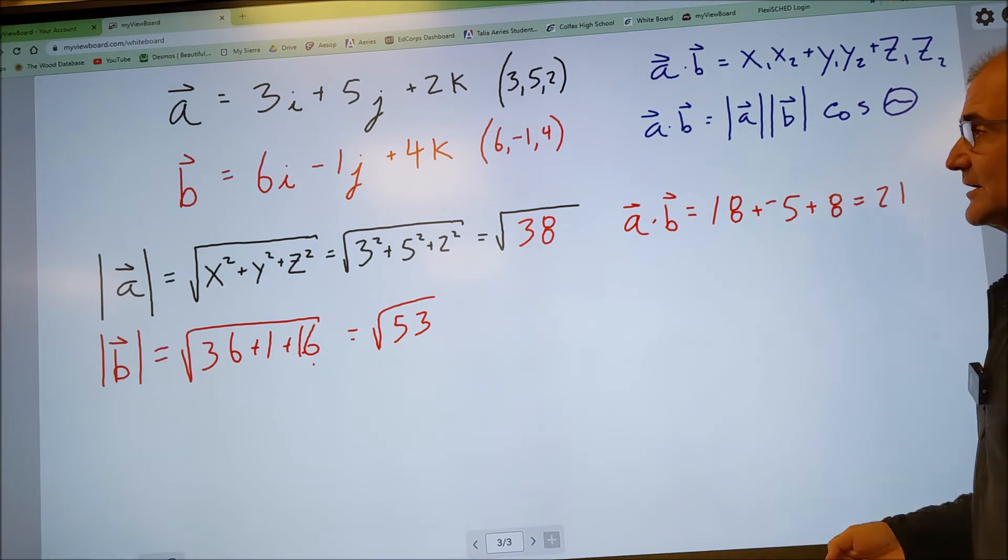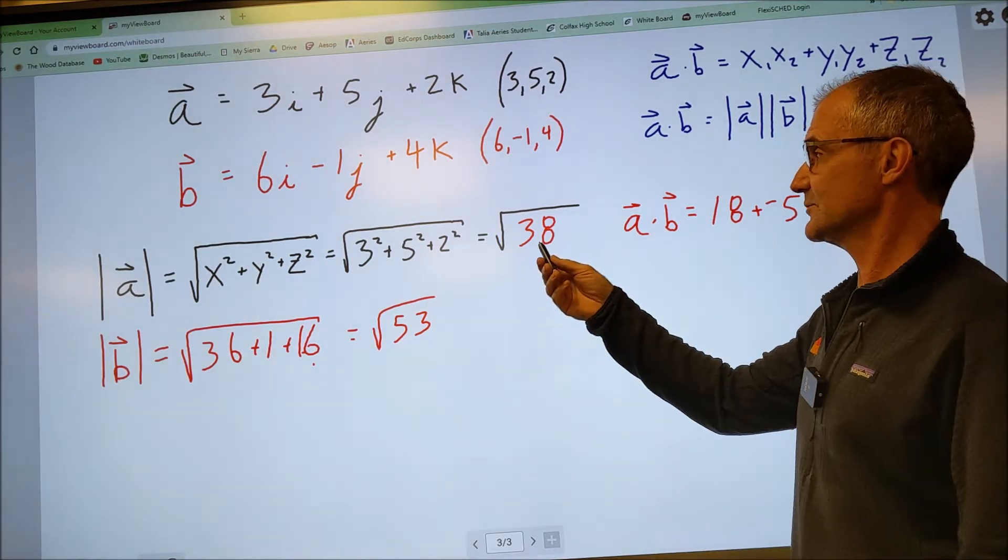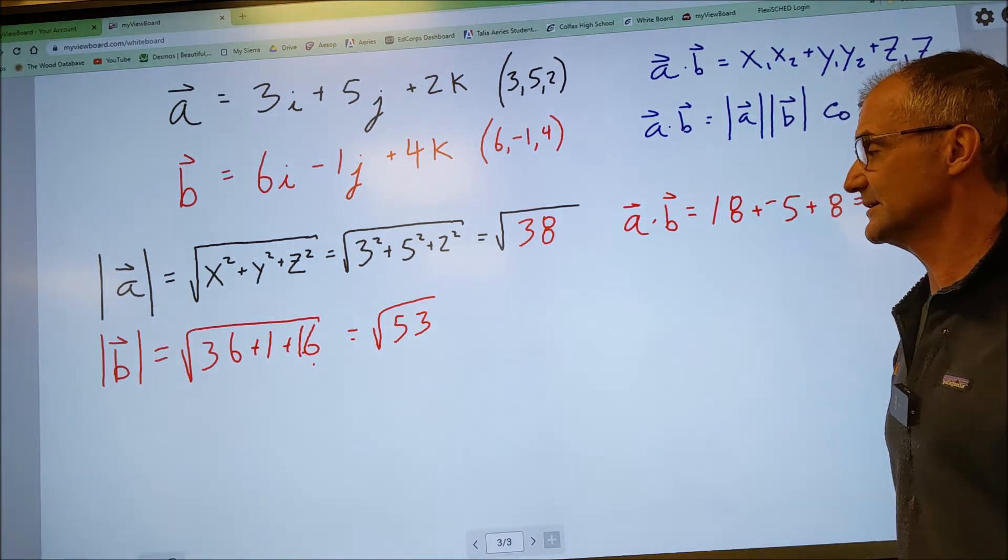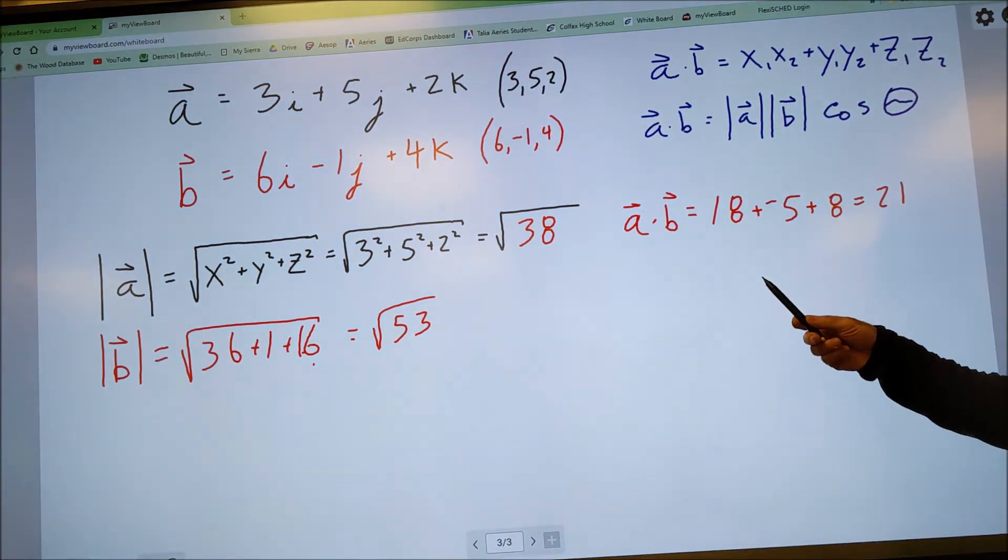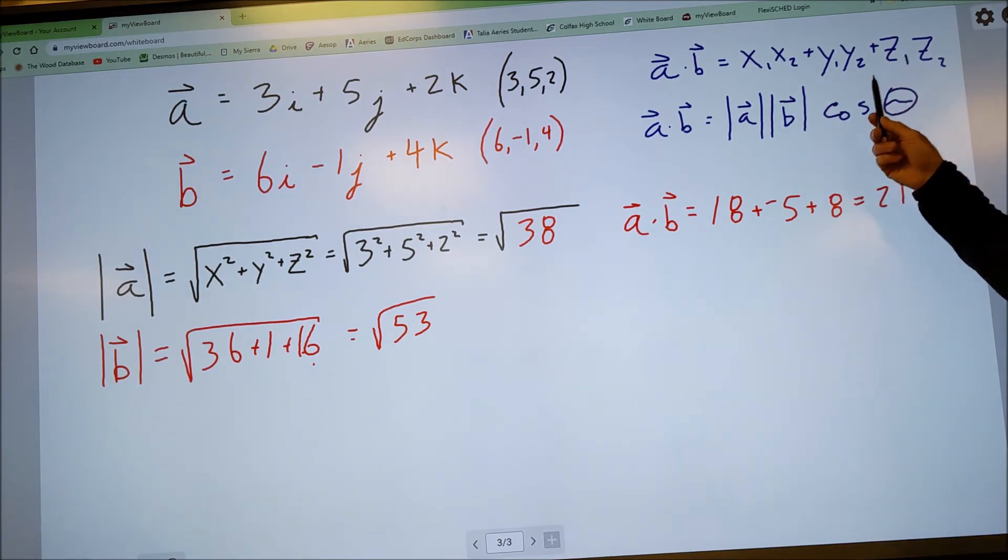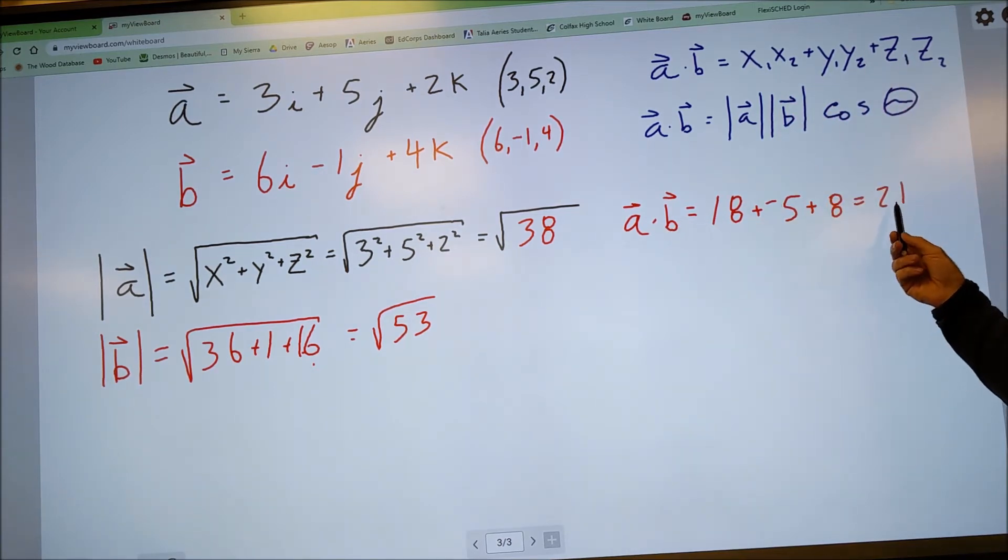So I've done a few things so far. I found the magnitude of A, square root of 38. The magnitude of B, square root of 53. I've also found the dot product, A dot B, the X values, the Y values, the Z values. So A dot B was equal to 21.